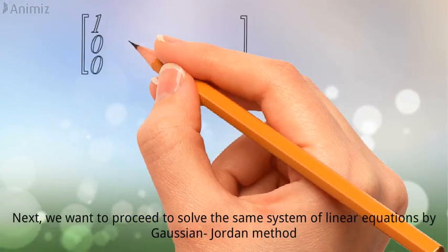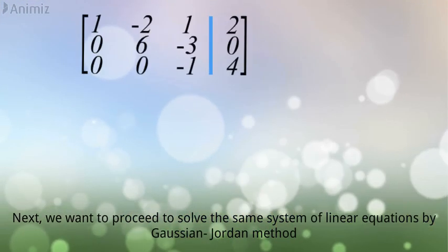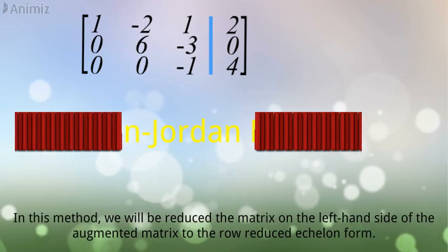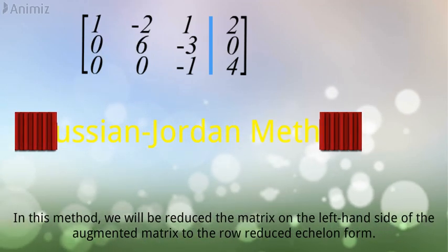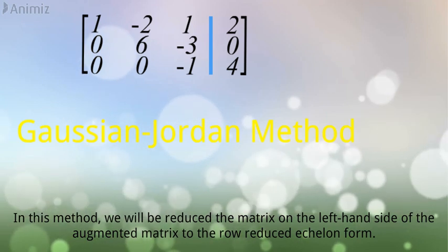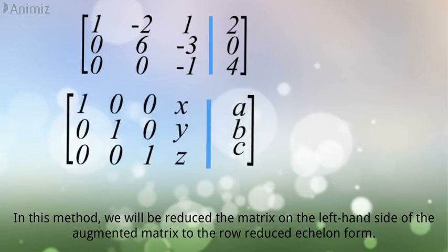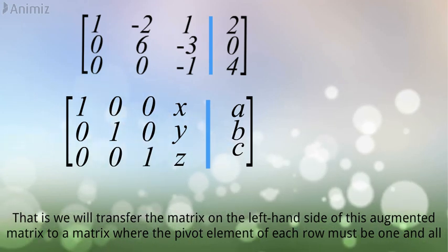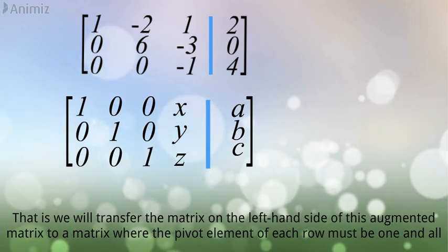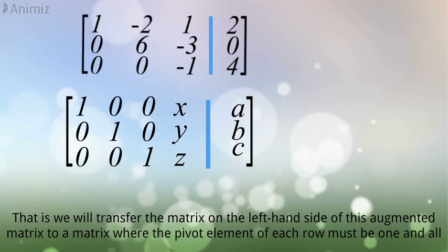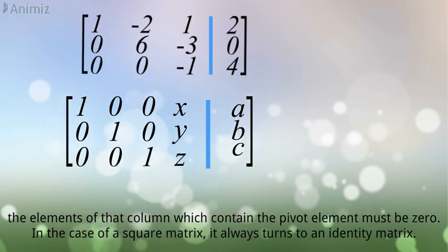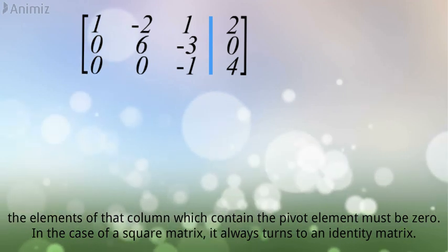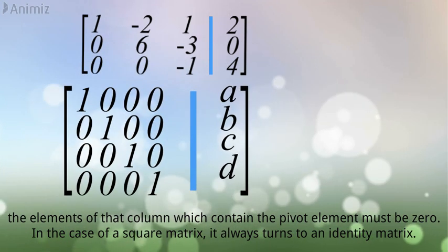Thus the solution of the given system of linear equations is x equals 2, y equals negative 2, and z equals negative 4. Next, we want to proceed to solve the same system of linear equations by Gauss and Jordan method. In this method, we will be reduced to the matrix on the left-hand side of the augmented matrix to the row reduced echelon form. That is we will transfer the matrix on the left-hand side of this augmented matrix to a matrix where the pivot element of each row must be 1 and all the elements of that column which contain the pivot element must be 0. In the case of a square matrix, it always turns to an identity matrix.